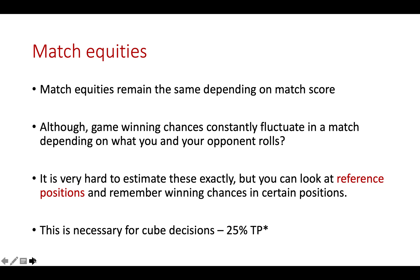Now, if instead of making the five point with the opening 3-1, I were to do something unorthodox — like play 24 to 23, 13 to 10 — then my game winning chances would only go up by 6 percent to 56. That's simply because making the five point with a 3-1 is much better than any other alternative plays. I'm getting more equity in that game and having more of an advantage.